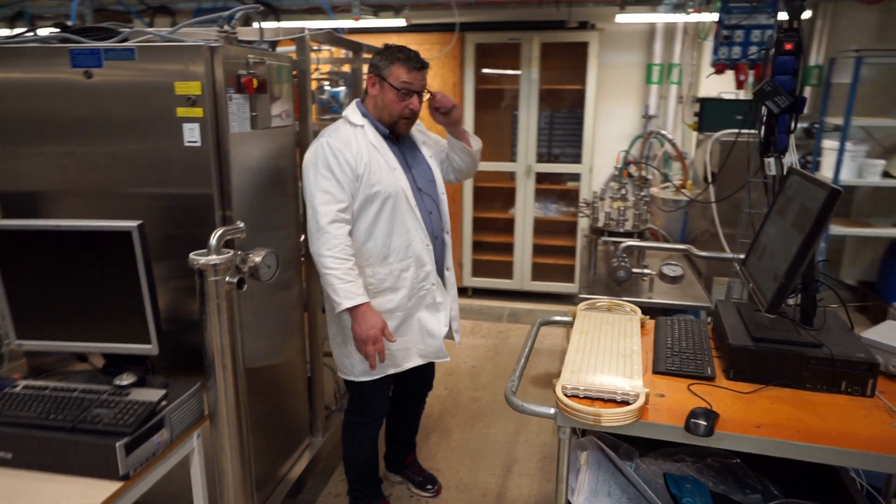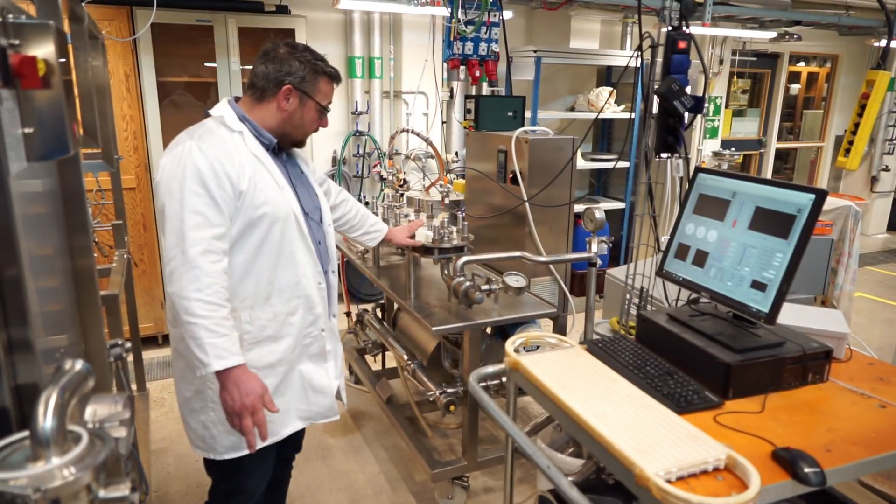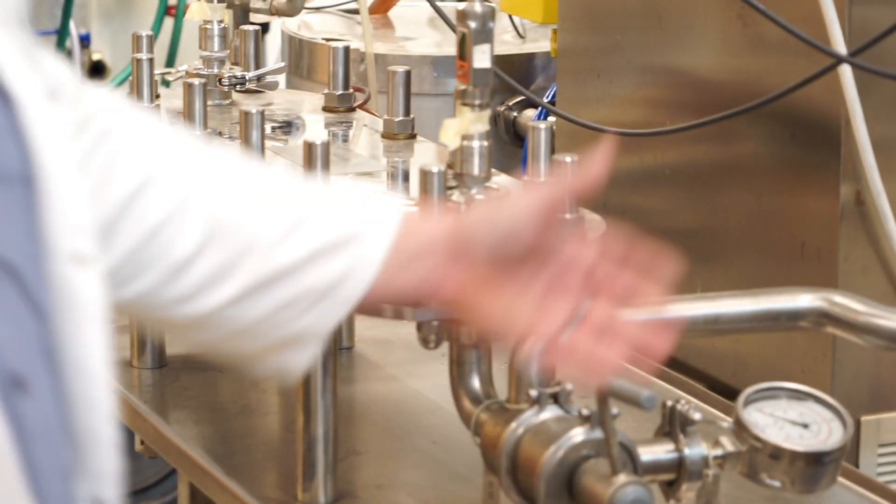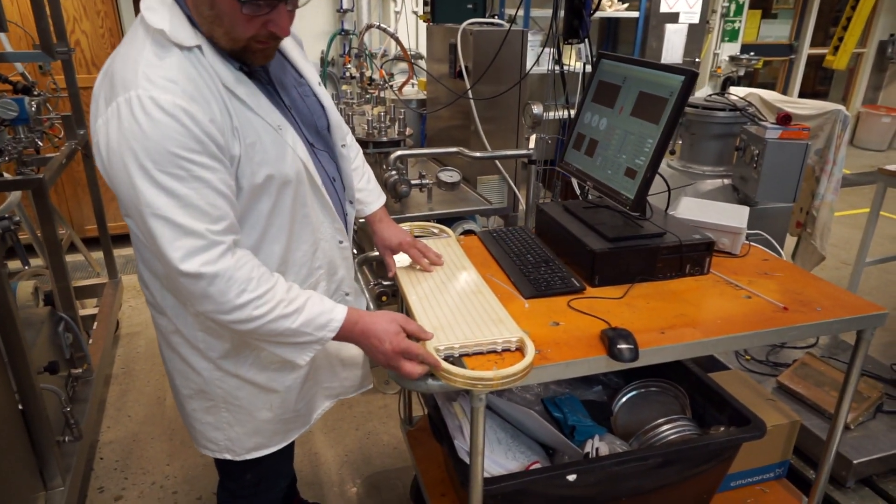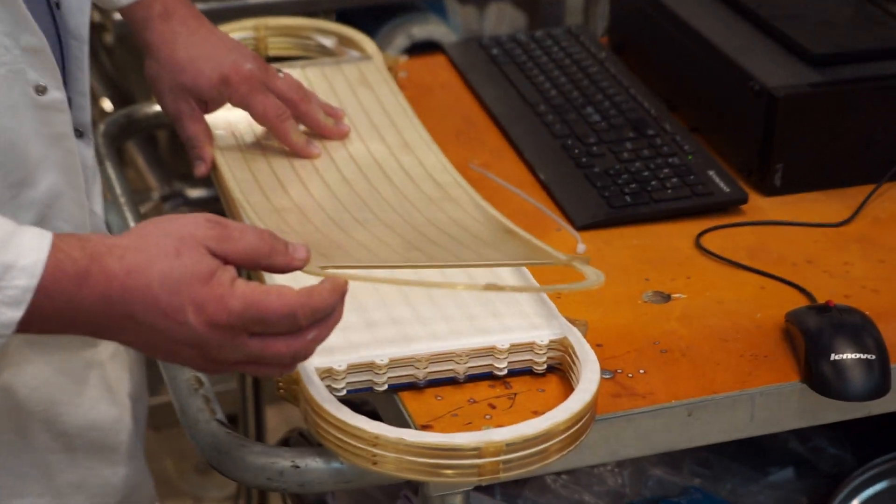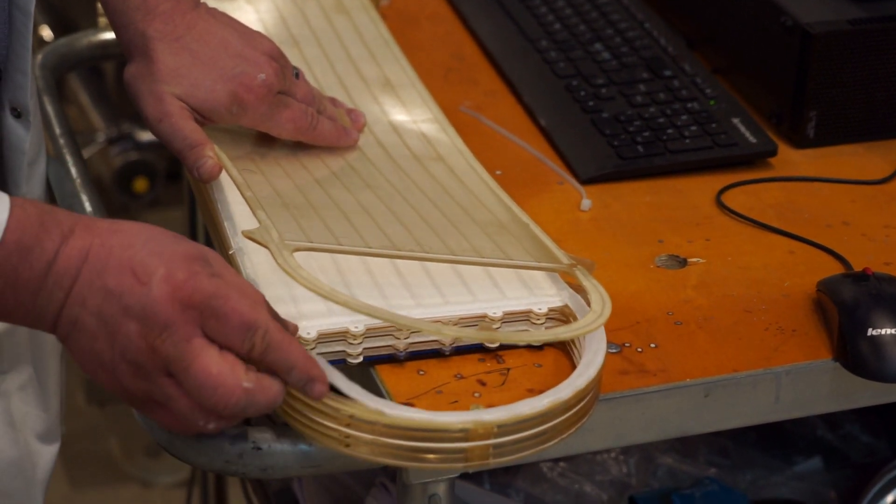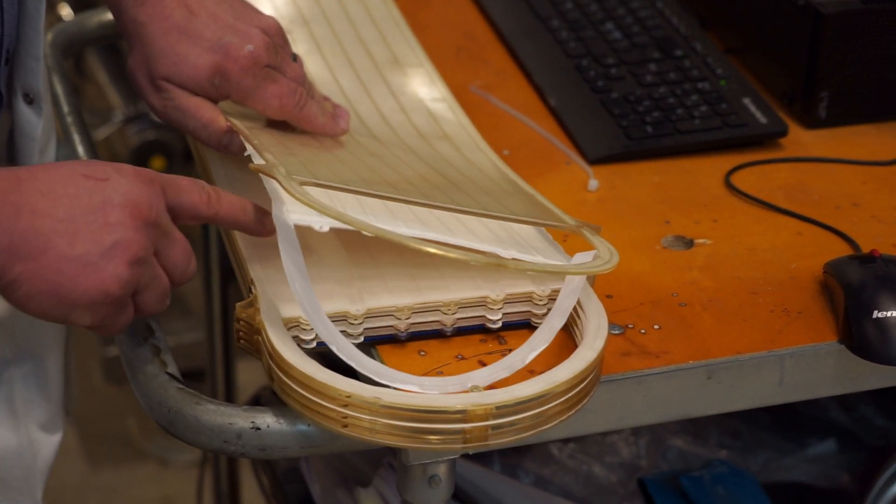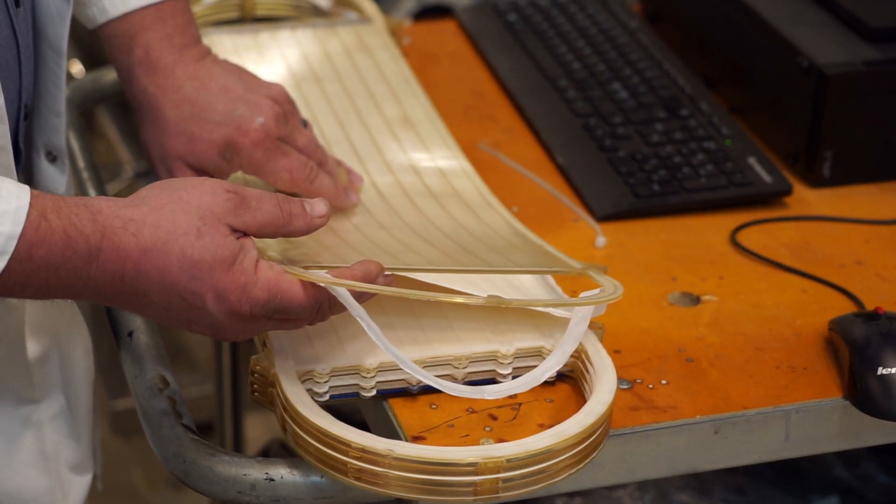So right now there's a plate and frame module, and the module is here. The membranes are sitting in here, and they look like this. There's a plate that the membrane rests on, there's a membrane, and there's a second membrane. So between these two membranes, the liquid flows.